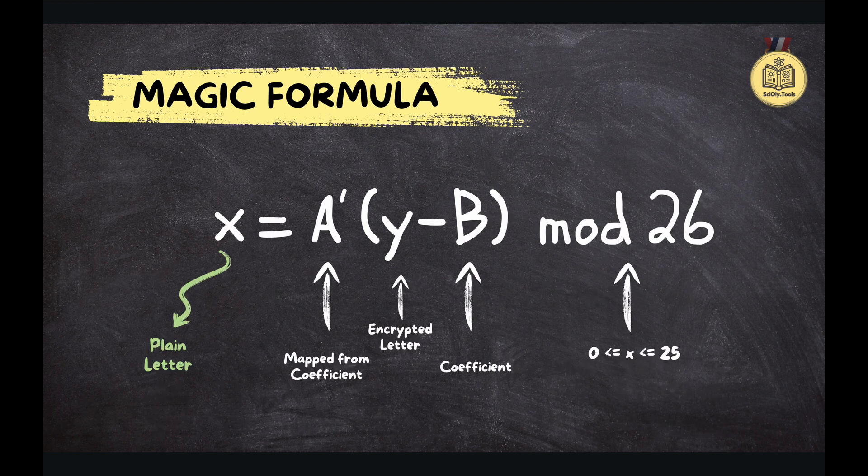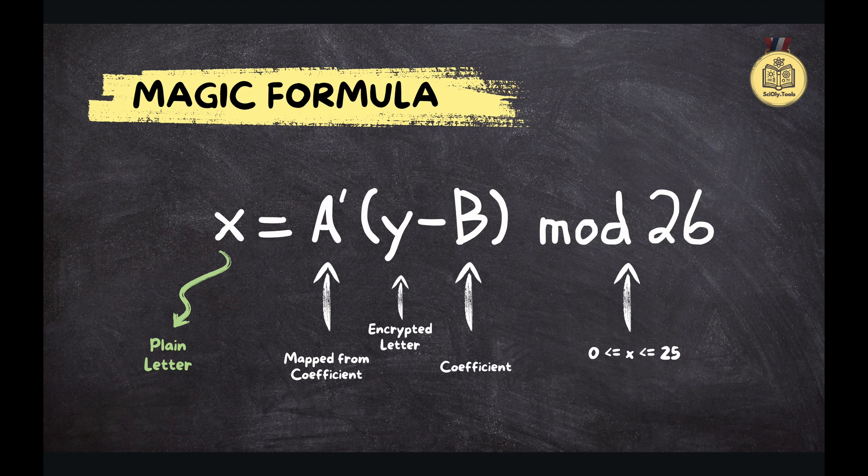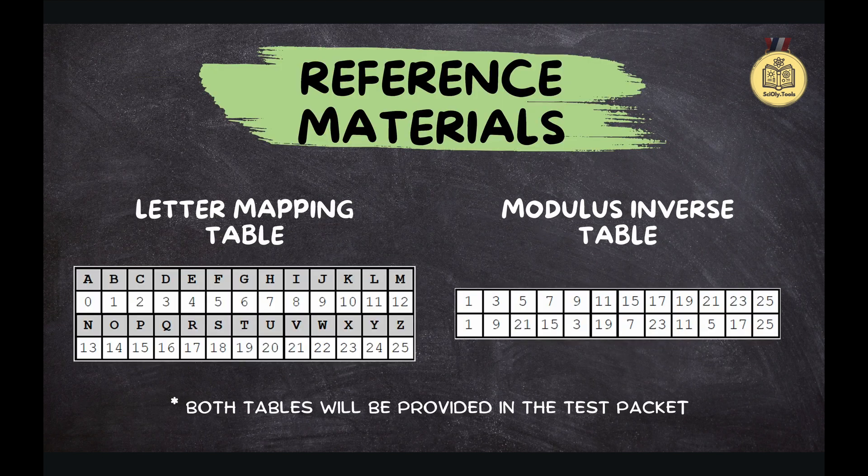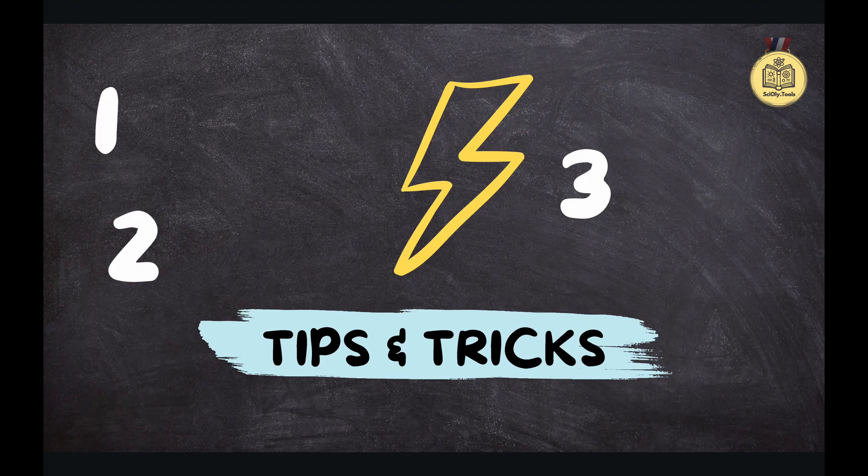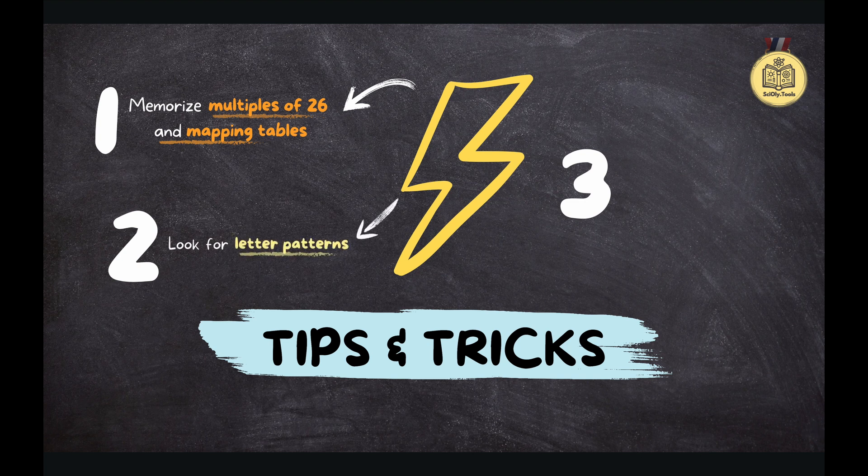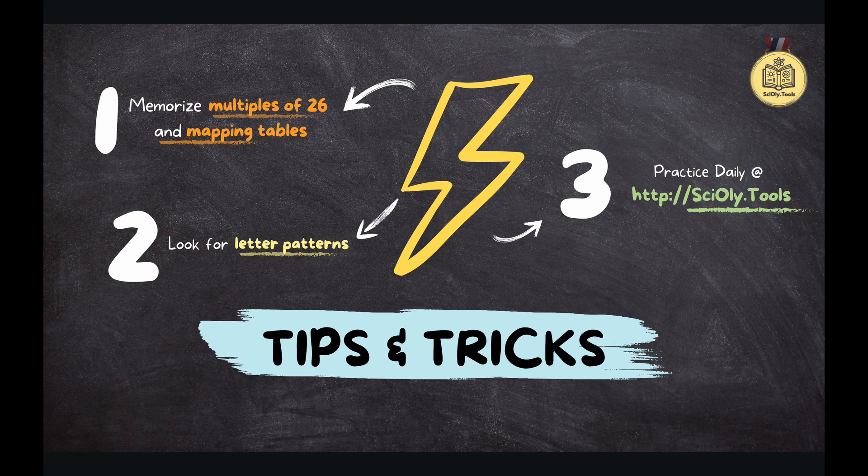So let's recap what we've learned so far. We've got our formula, X equals A inverse times the quantity Y minus B. Our handy tables for mapping letters to numbers and finding A inverse. It's like having a master key that unlocks a whole world of secret communication. If our listeners master this, they're well on their way to becoming code-breaking ninjas. Absolutely. And who knows, maybe they'll even go on to create their own super-secret ciphers one day.